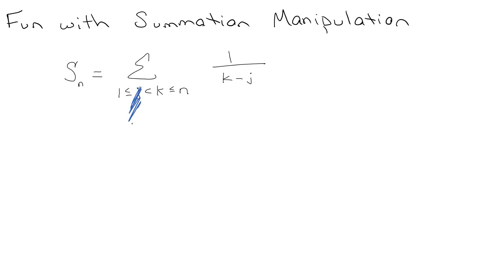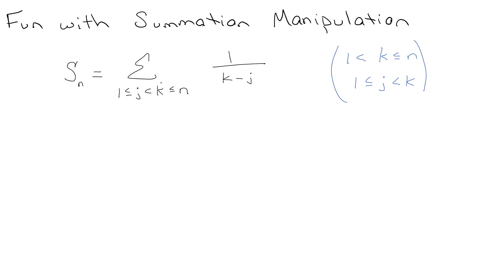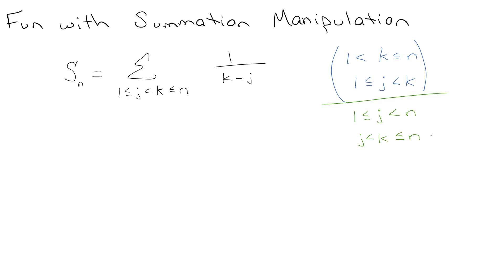One way to interpret this: if I cover up j, I can see that k has to be less than or equal to n, and it can't get all the way down to 1 because it has to be strictly greater than something. So k > 1, and j is controlled by being between 1 and k. Alternatively, covering up k: 1 ≤ j < n, and then k goes from j+1 up to n.